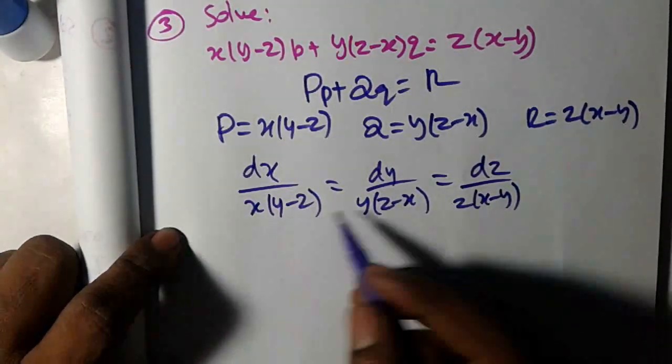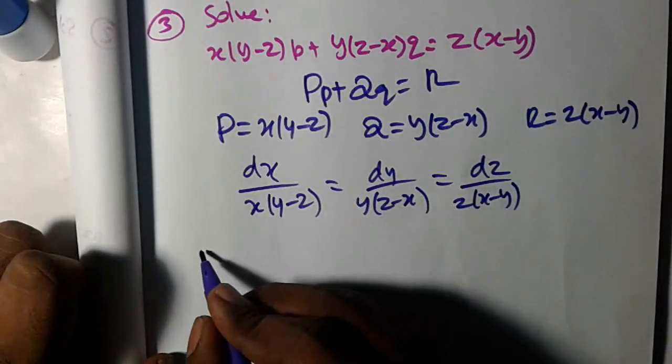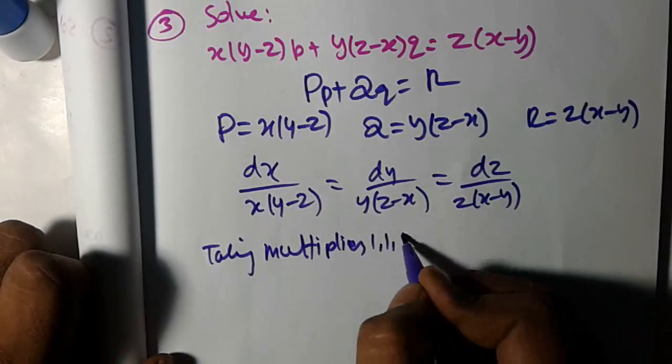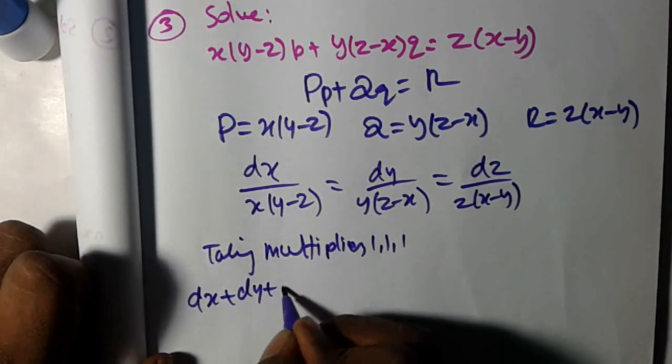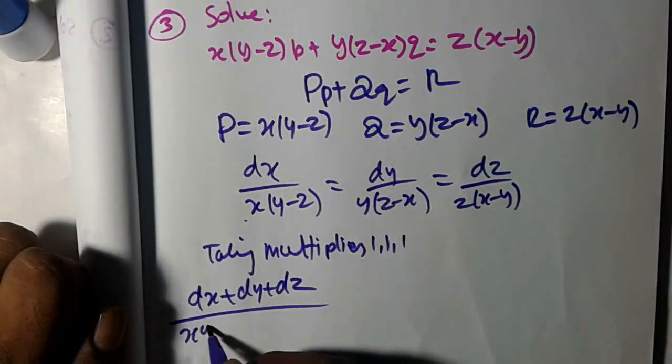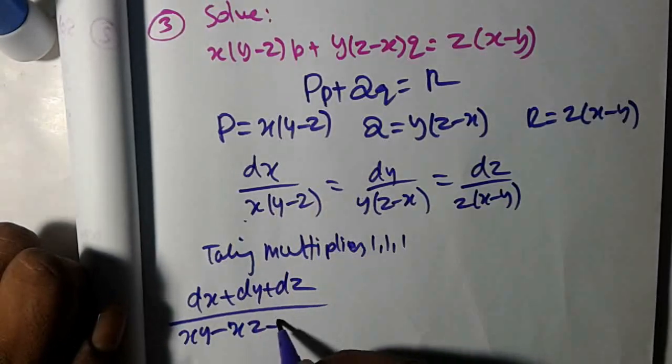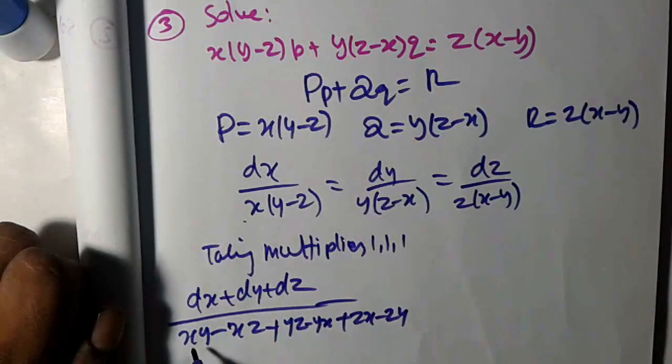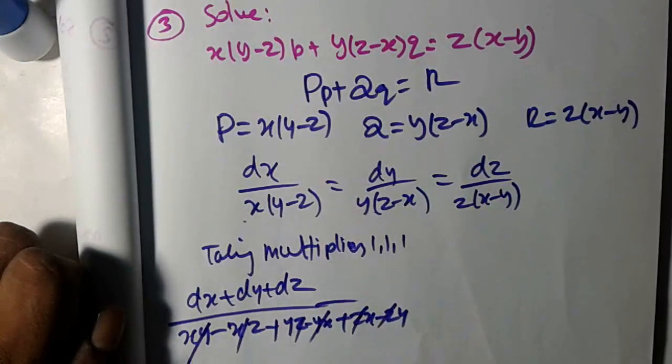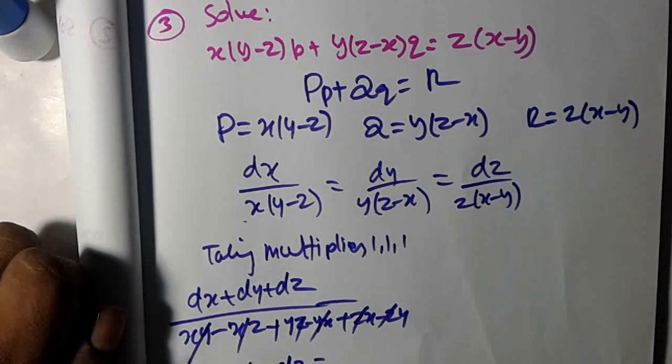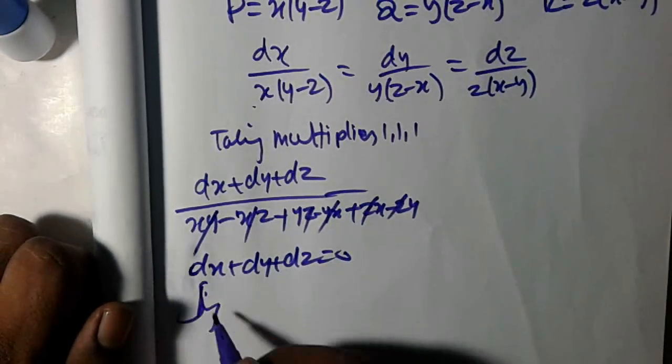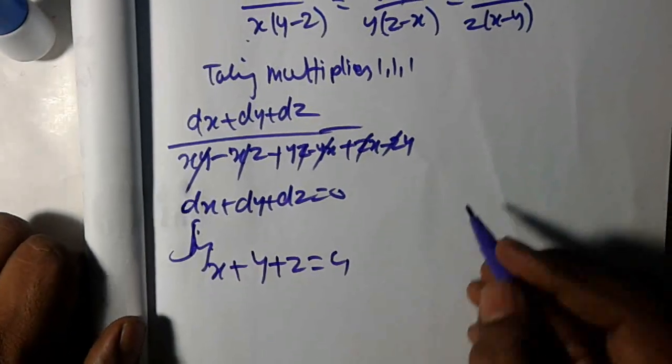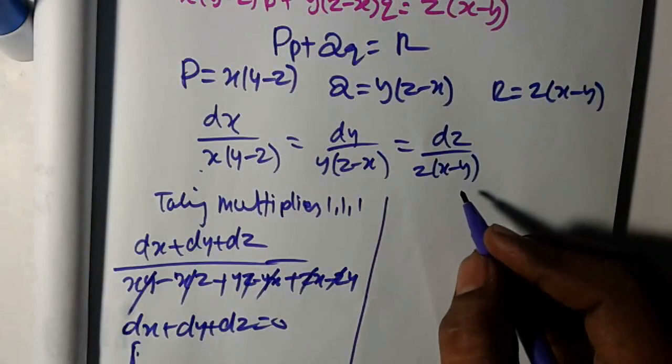To do the direct method, using the multiplier method, add them. Taking the multipliers 1, 1, 1, you can add dx plus dy plus dz that will be equal to x(y-z) plus y(z-x) plus z(x-y). So xy, xy cut, everything cuts out is 0. So dx plus dy plus dz is equal to 0. So now it's time to write.